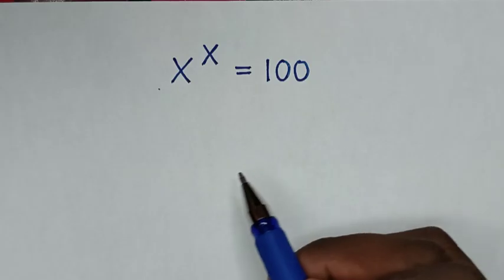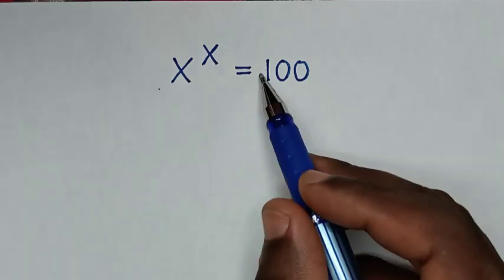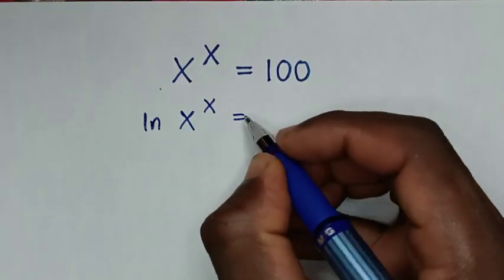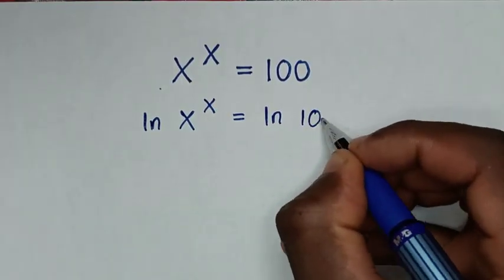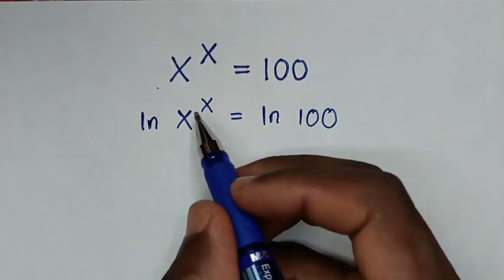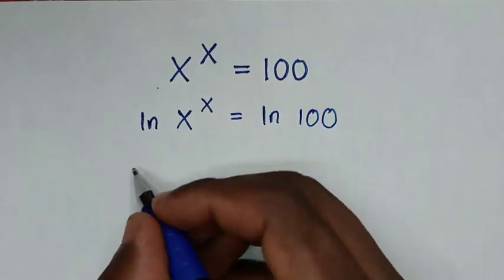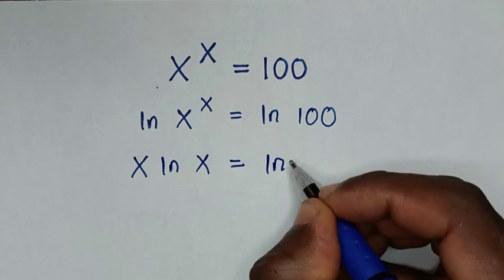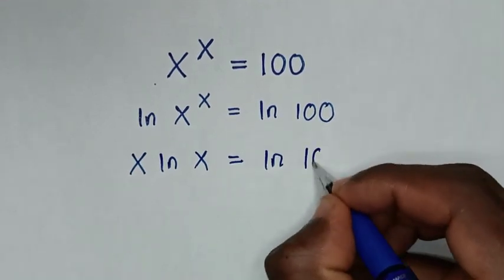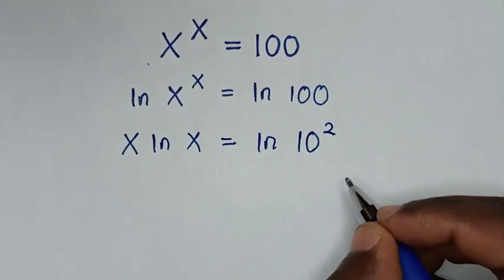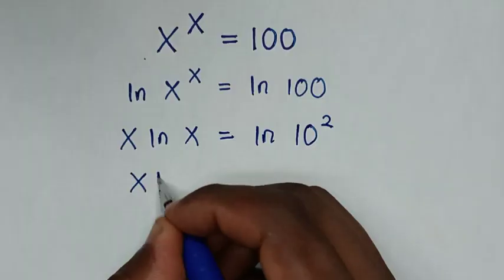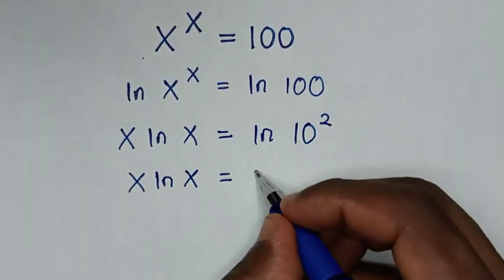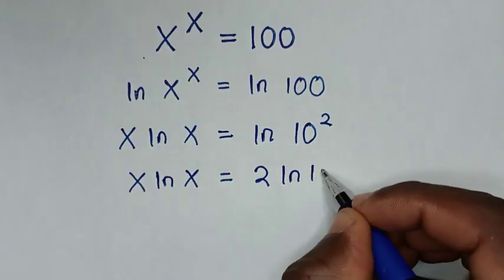Now in the first step, we start by applying ln on both sides. So it will be ln of x to the power of x is equal to ln of 100. Then this power of x will move to the base, so it will be x ln of x is equal to ln of 100, which is the same as 10 squared. Then it will be x ln of x is equal to — this power of 2 will move to the base — so it will be 2 ln of 10.